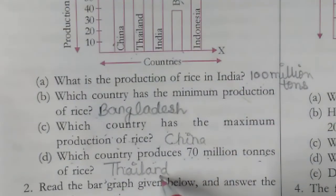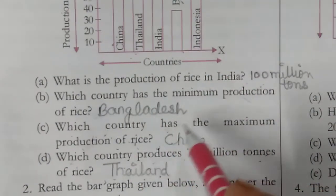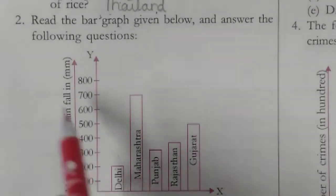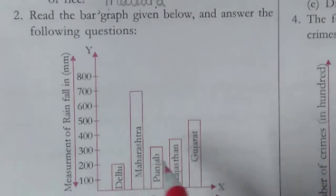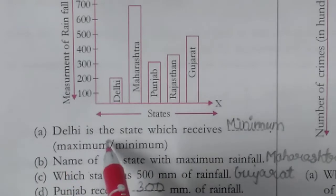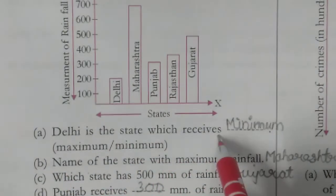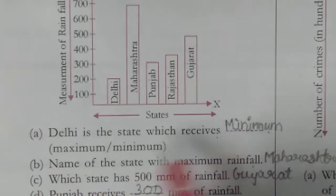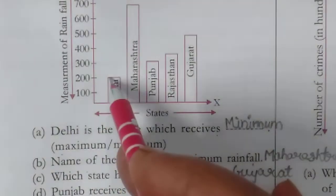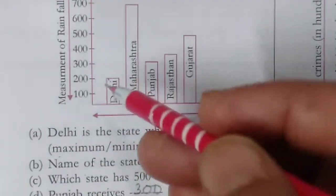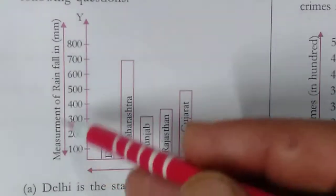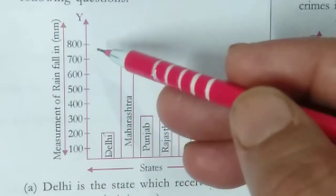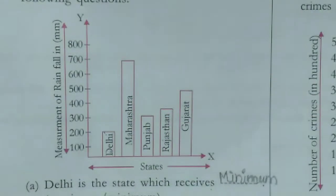The second question of this exercise: read the bar graph given below and answer the following questions. The first question is which state receives the minimum or maximum rainfall. The measurement of rainfall is in millimetres. Delhi receives the minimum rainfall.